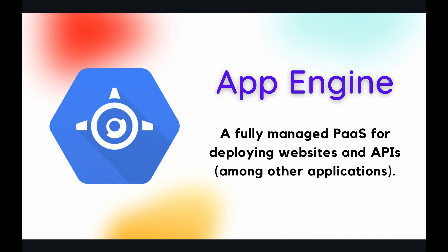That means all you need to do is just develop your application, code it in your favorite runtime, whether it is Node.js, Python, or Go. They have a lot of different containers for you, and all you need to do is sit down and focus on the code. Once you push it to App Engine, Google Cloud will fully manage everything else and guarantee things such as uptime and scaling your application from zero servers up to thousands and thousands of servers.